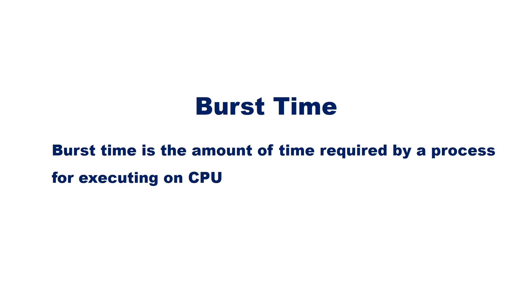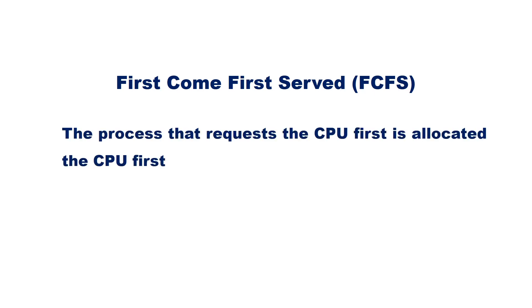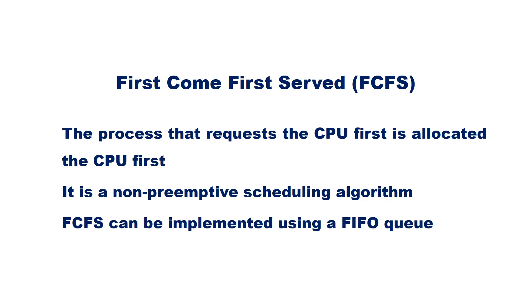Burst time is the amount of time required by a process for executing on the CPU. There are several CPU scheduling algorithms; let us discuss them one by one. The simplest scheduling algorithm is First Come First Served, or FCFS. In FCFS, the process that requests the CPU first is allocated the CPU first. It is a non-preemptive scheduling algorithm, meaning once allocated, the process uses the CPU until its termination or until it moves to the blocked state.